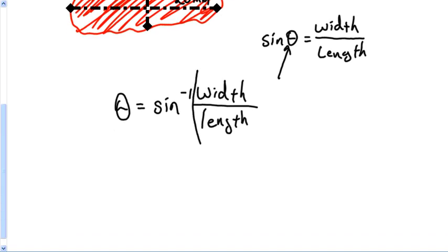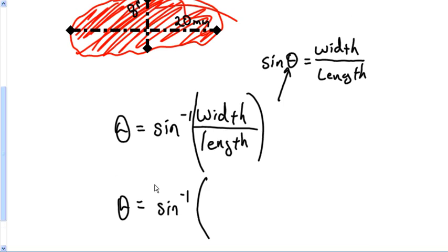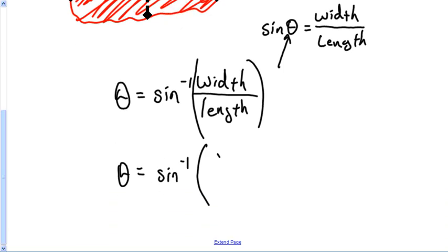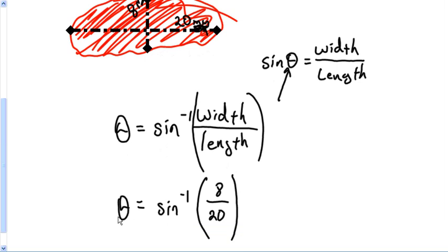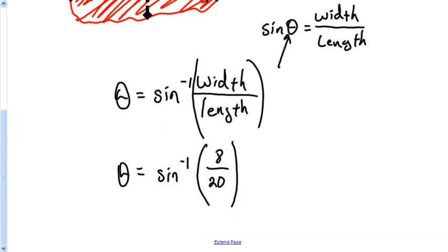It's easy. Theta is equal to sine inverse of the width, which for mine is 8, and the length of mine is 20. Your units do have to match, so make sure if that says millimeters that the other one says millimeters as well, and I'll show you how to plug this in the calculator.